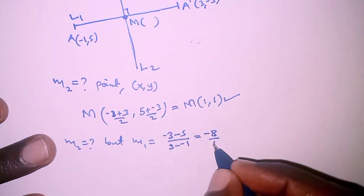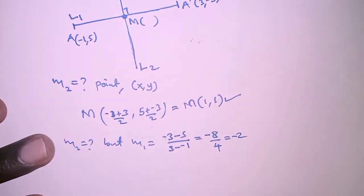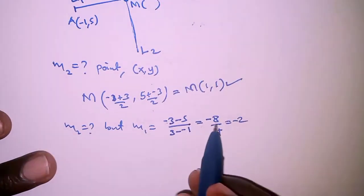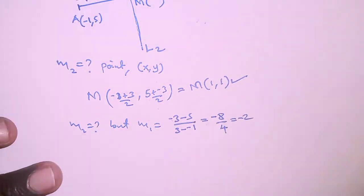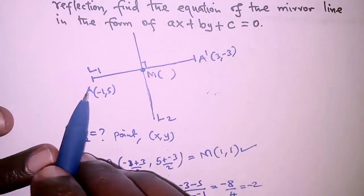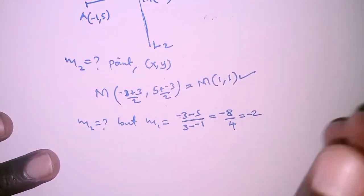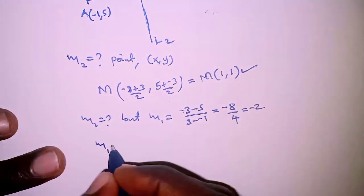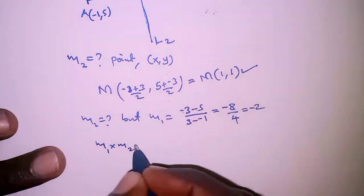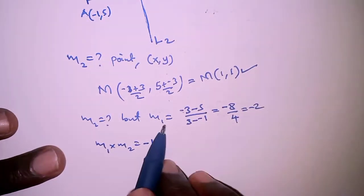So with m1 being -2, we know that the two lines are related as follows: line 1 and line 2 are perpendicular to each other, so the product of their gradients should be -1.